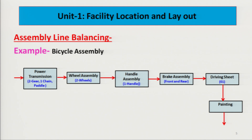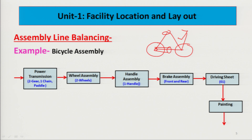To understand assembly line balancing, let us take the example of assembling a bicycle. The manufacturing components — frame, wheels, handle — are already made. We need to assemble all of them. For fast industrial-purpose assembly, we create an assembly line where work starts at one end and a finished bicycle comes out the other end. Suppose we have six work stations on this assembly line.